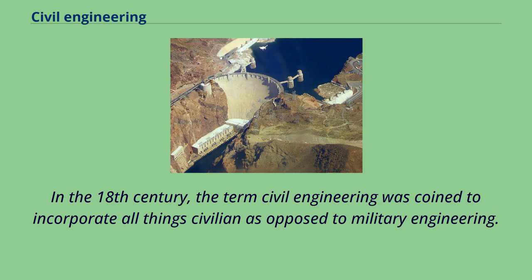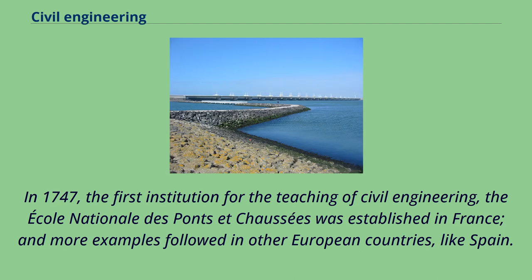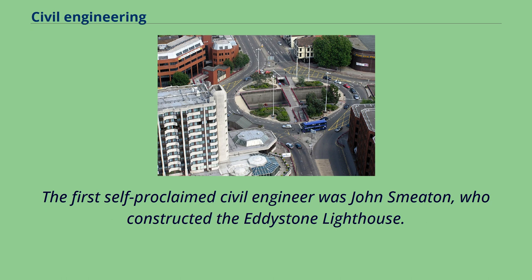In the 18th century, the term civil engineering was coined to incorporate all things civilian as opposed to military engineering. In 1747, the first institution for the teaching of civil engineering, the École Nationale des Ponts et Chaussées, was established in France, and more examples followed in other European countries like Spain. The first self-proclaimed civil engineer was John Smeaton, who constructed the Eddystone Lighthouse.